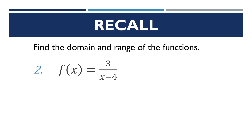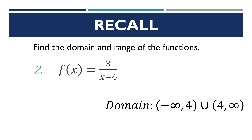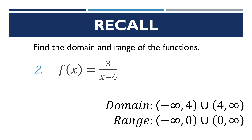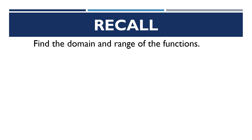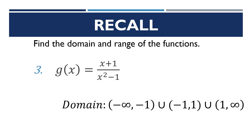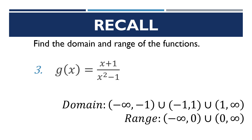For f(x) = 3 over (x minus 4), the domain is negative infinity to 4, union 4 to positive infinity, and the range is negative infinity to 0, union 0 to positive infinity. Then for g(x) = (x + 1) over (x squared minus 1), the domain is negative infinity to negative 1, union negative 1 to positive 1, union positive 1 to positive infinity, and the range is negative infinity to 0, union 0 to positive infinity.